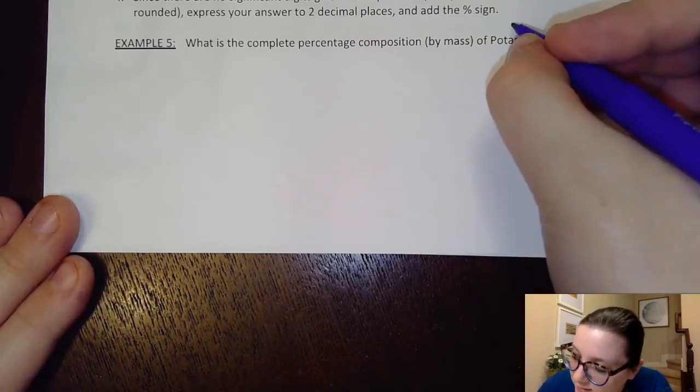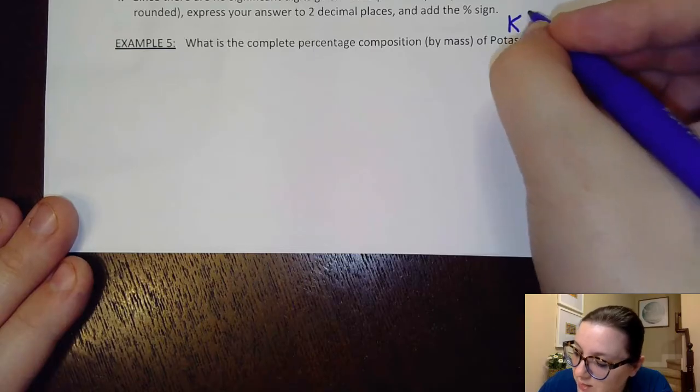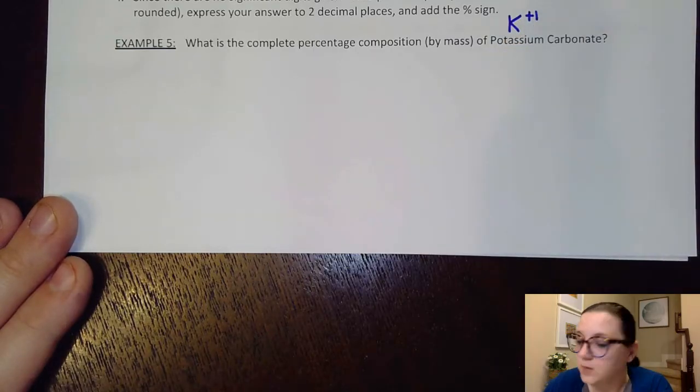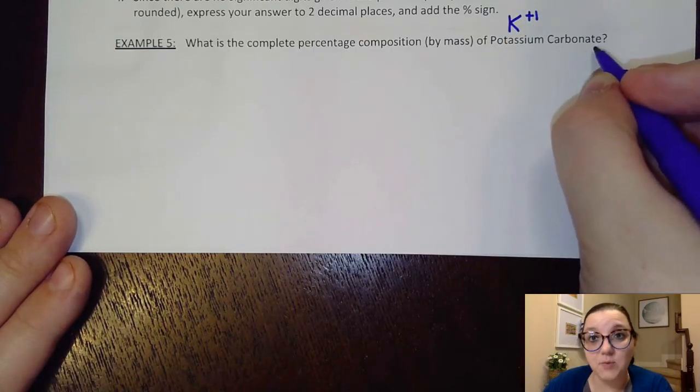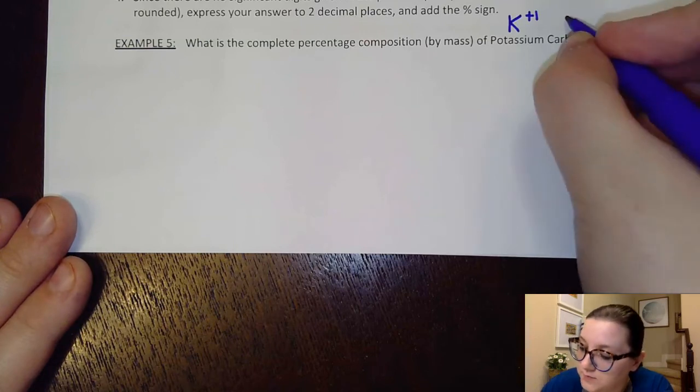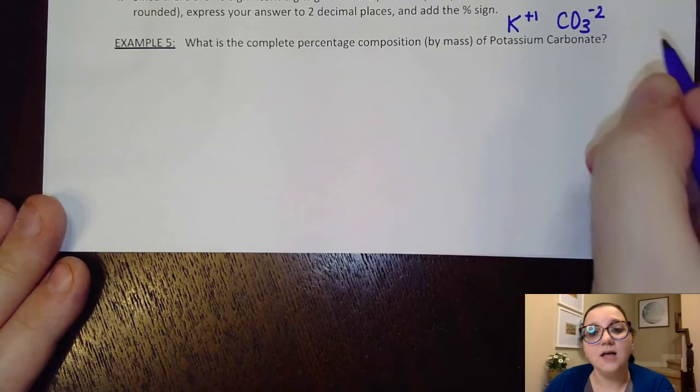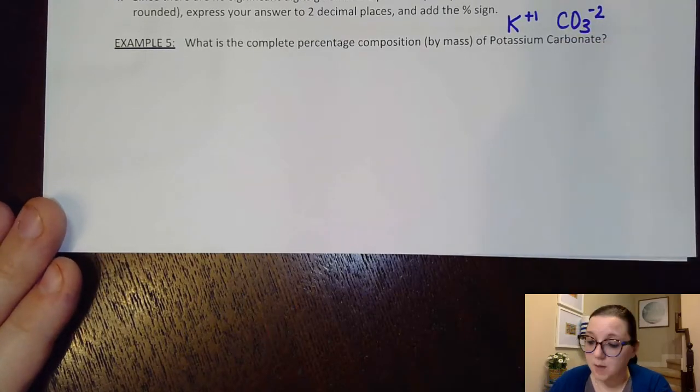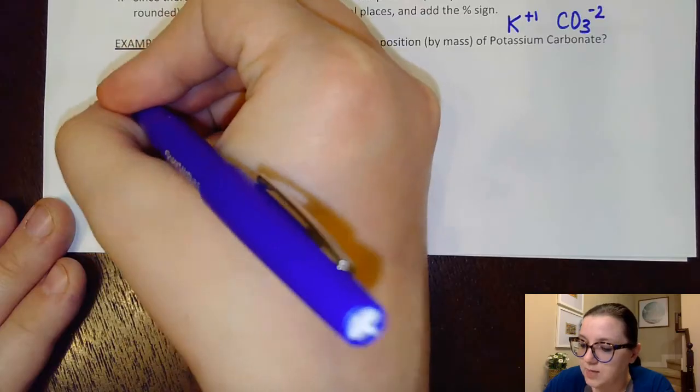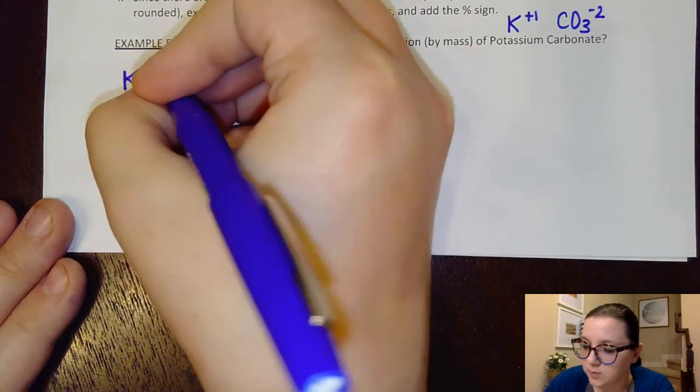Okay, so with that said, potassium is K with a plus one charge because it's a group one. Carbonate, that would be a polyatomic ion of CO3 with a negative two charge. As we can see, those two charges do not balance. So our overall compound will be K2CO3.